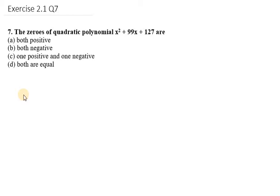Hello everyone, let's start with question number 7. It says the zeros of the quadratic polynomial x² + 99x + 127 are: (a) both positive, (b) both negative, (c) one positive and one negative, or (d) both are equal. There is one method to find out.